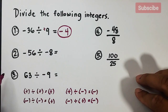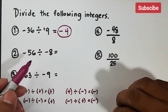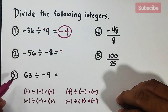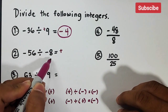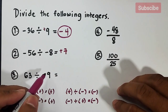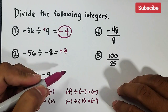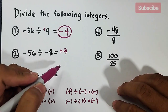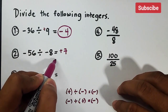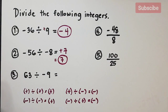Let's continue with negative 56 divided by negative eight. Both are negative — same signs — so the answer is positive. 56 divided by eight equals seven, so the answer is positive seven. In integers, you don't need to write the positive sign because it is already understood — if the number is positive, no sign is written in front of it. So just write seven.